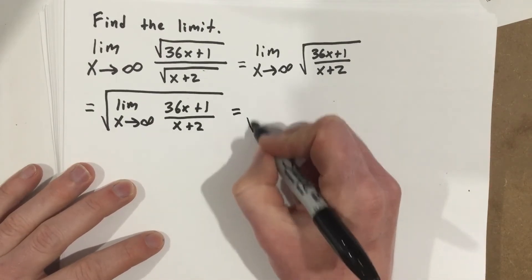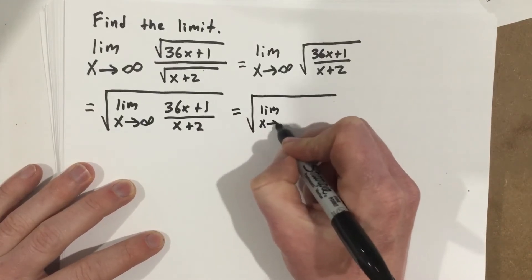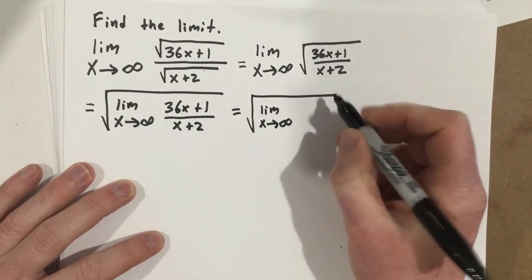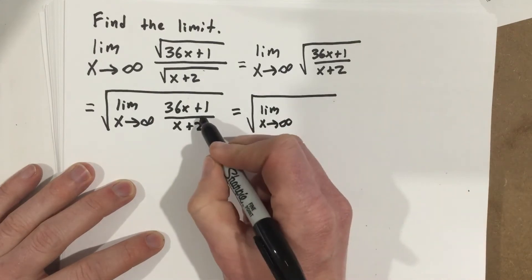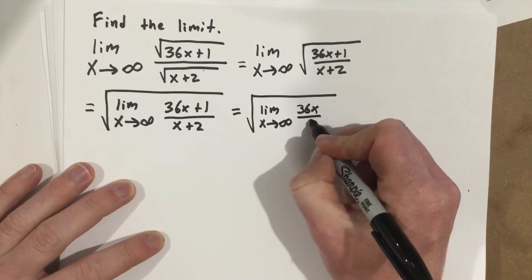So I can say root limit as x approaches infinity. And you should remember this from chapter 2, that I'm just going to cross out the plus 1 and the plus 2. This is really just 36x over x.